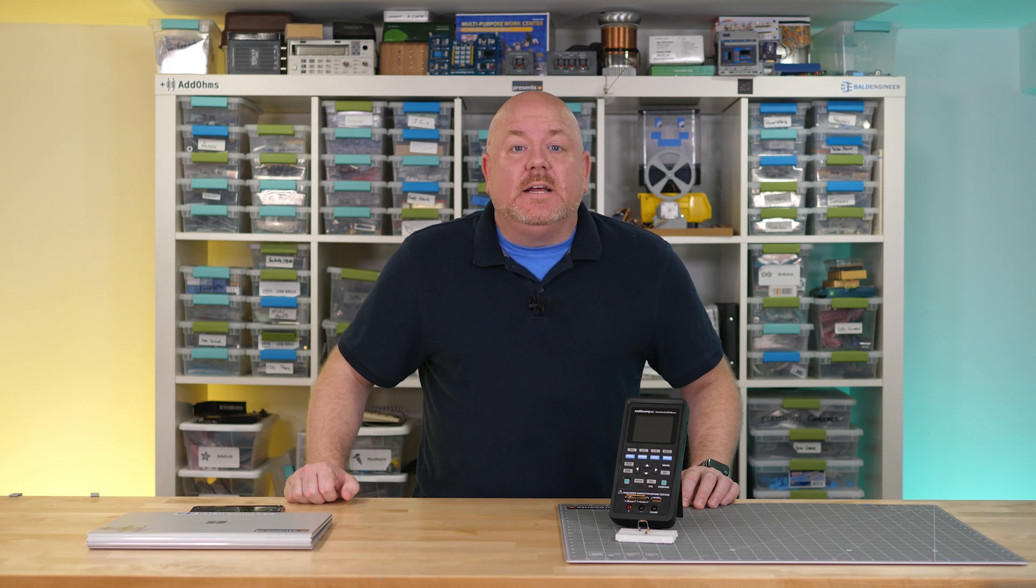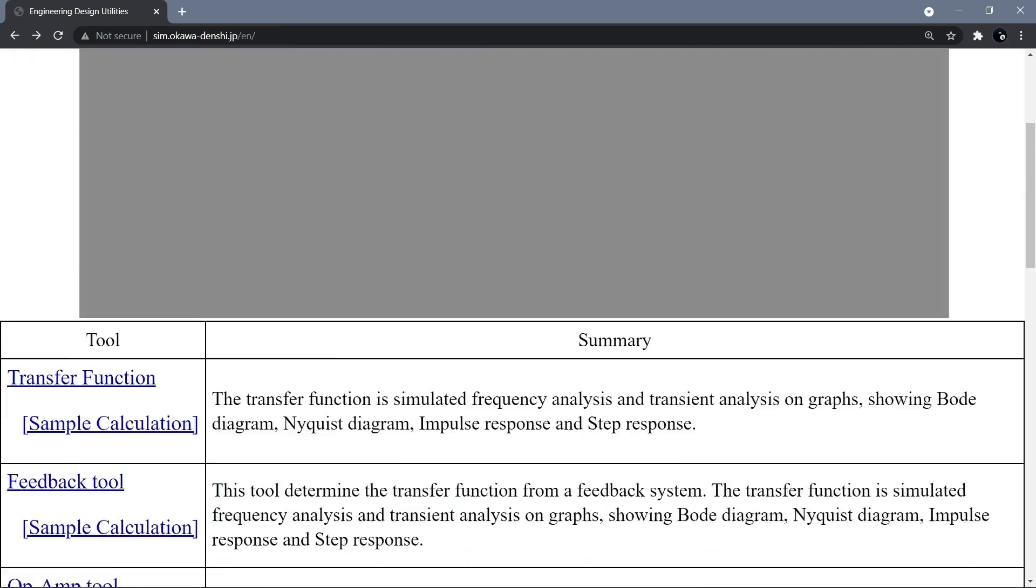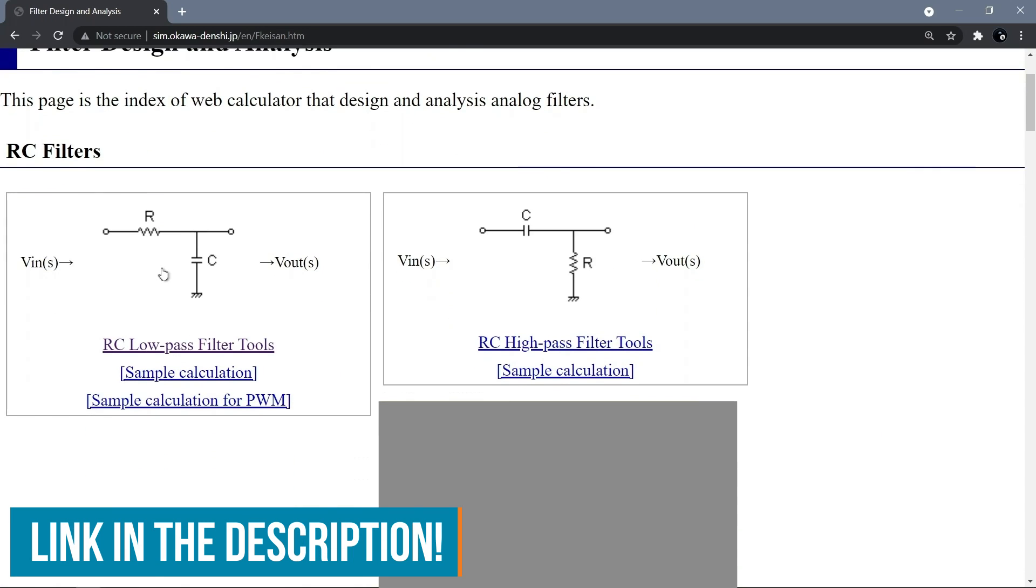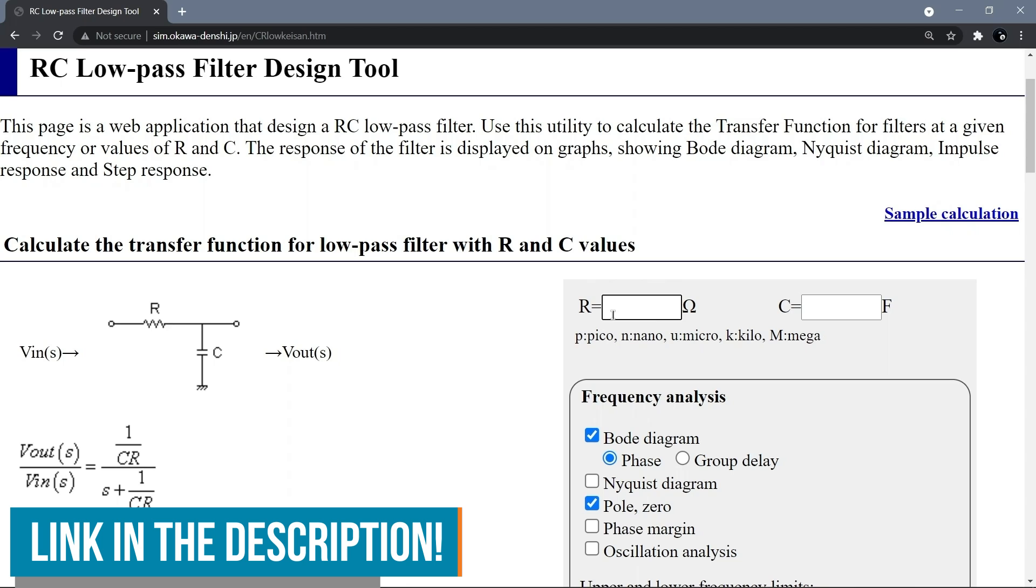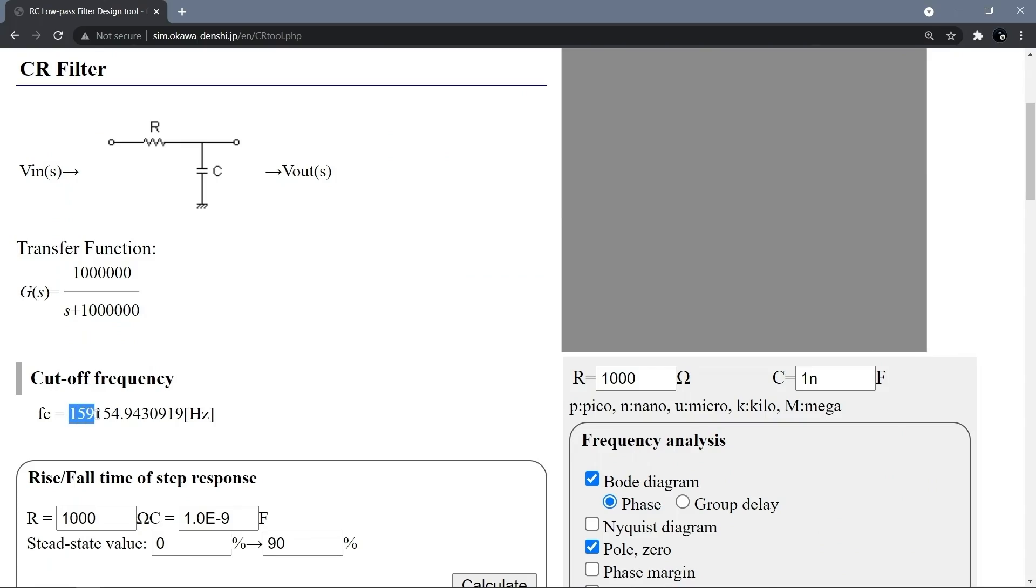For this example, let's use a 1 nF capacitor and a 1 kOhm resistor as a low-pass filter. We need to calculate the cutoff frequency. For that, I am using this web-based calculator. You can find a link to it in the show notes over on the Element 14 community. Using our nominal values, the low-pass filter's cutoff frequency is, let's say, 159 kHz.